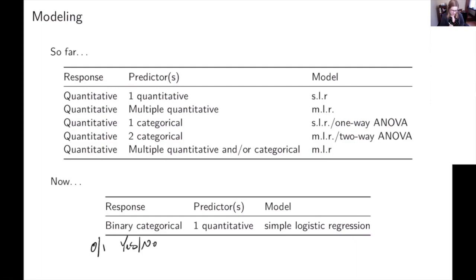So logistic regression is going to work with that binary type of categorical variable. There are extensions to this where you could have a categorical variable with more than two categories, but we're not going to talk about that in this class.